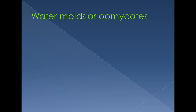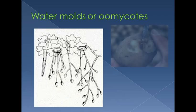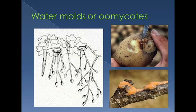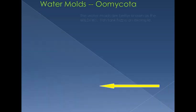Water molds or Oomycota are the last topic of today's lecture and are also fungi-like protists. In this figure, hyphae are growing and sporangia produce spores that invade mesophyll cells. You can see a potato affected by the water mold. Water molds destroyed huge quantities of potato crops and were responsible for a famine known as the Irish Famine. Water molds are also known as mildews.